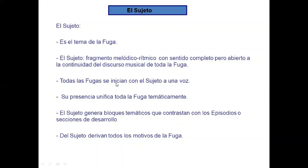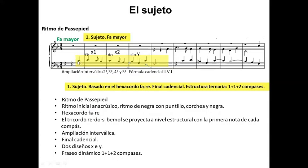Todas las fugas se inician con el sujeto, normalmente a una voz. Su presencia unifica todas las voces de la textura fugada. El sujeto y su presencia puede generar bloques temáticos que contrastan con los episodios, que tienen más carácter de transición o de desarrollo dentro de este carácter homogéneo que tiene la música barroca. Del sujeto derivan todos los motivos de la fuga. Vamos a hablar del sujeto de la fuga número 10 de Fischer. Tenemos una duración de cuatro compases y aparece en una voz intermedia, en este caso la voz del tenor. Podemos observar un inicio anacrúsico y unos ritmos con puntillos, ya que se trata del ritmo de una danza barroca de origen francés que llamamos Passepied. Y este elemento va a unificar toda la pieza.